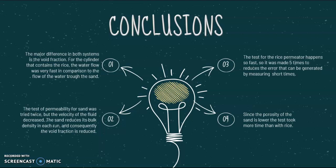The test of permeability for sand was tried twice, but the velocity of the fluid decreased. The sand reduced its bulk density in each run and consequently the void fraction is reduced.